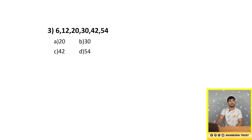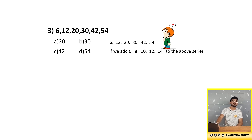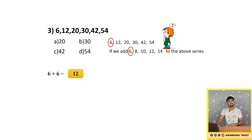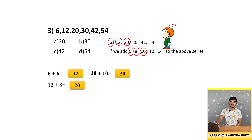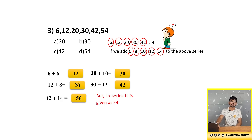Let's move on to the next question: 6, 12, 20, 30, 42 and 54. We add 6, 8, 10, 12 and 14 to generate the series. 6+6=12, 12+8=20, 20+10=30, 30+12=42. Finally, 42+14 must be 56, but the number given is 54. So 54 is the wrong number in the series — that is option D.